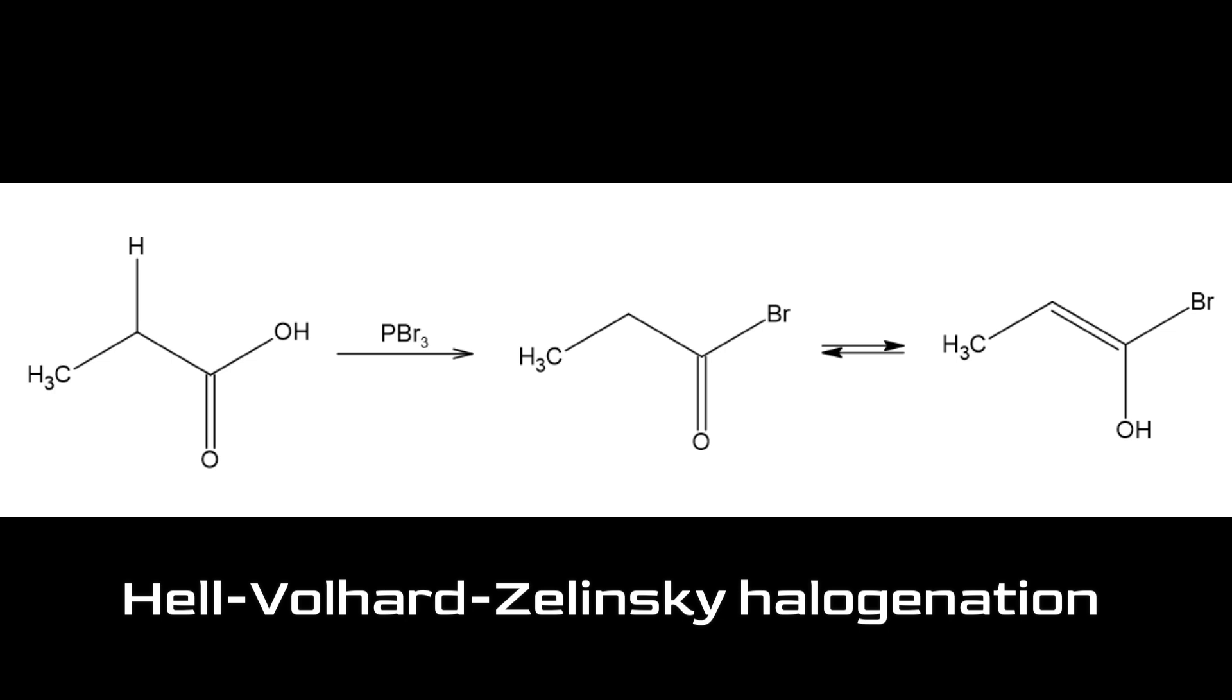To obtain 2-bromopropanoic acid, the Hel-Volard-Zelensky halogenation process is used. An acyl bromide is formed by reacting propionic acid with phosphorus tribromide, which replaces the hydroxyl group of the carboxyl group for bromine.